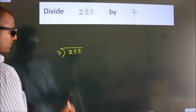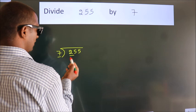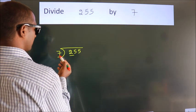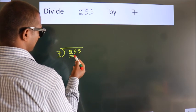Next. Here we have 2. Here 7. 2 is smaller than 7. So we should take 2 numbers, 25.